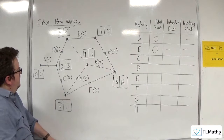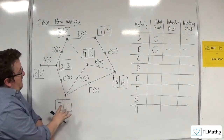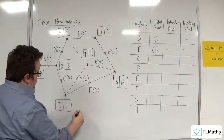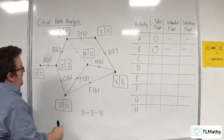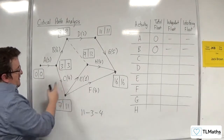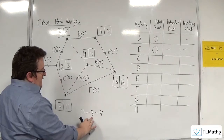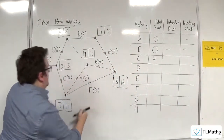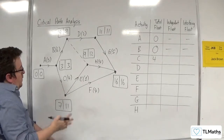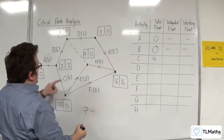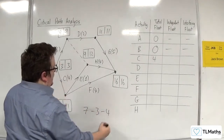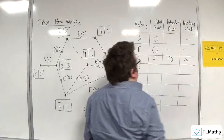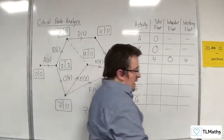How about C? For C, that's not critical because we've got 7 and 11. The total float is 11 take away 3, take away 4. So 11 take away 3 is 8, take away 4 is 4. That's the total float. For the independent float, we use the inners: 7 take away 3, take away 4, which equals 0. So the interfering float is 4 take away 0, which is 4.